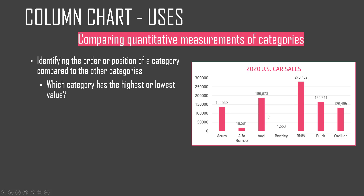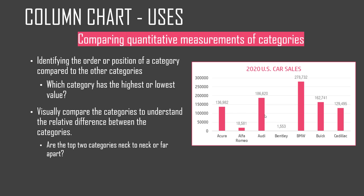We can also find out the second and the third and so on. We can visually compare the categories to identify the relative difference — this is not exact. The chart doesn't say exactly what the difference is between the top selling brand and the second best, but it shows whether Audi is very close to BMW or whether there is a gap between them. So we can determine relative closeness or distance visually, and that's another benefit of using a column chart.